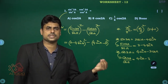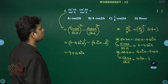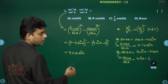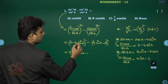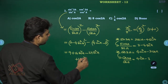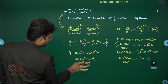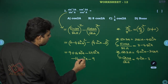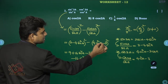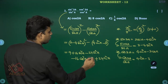Expanding using (a-b)² = a²+b²-2ab: (3 - 4 sin²a)² = 9 + 16 sin⁴a - 24 sin²a, and (4 cos²a - 3)² = 16 cos⁴a - 24 cos²a + 9. Subtracting, the 9 and -9 cancel.